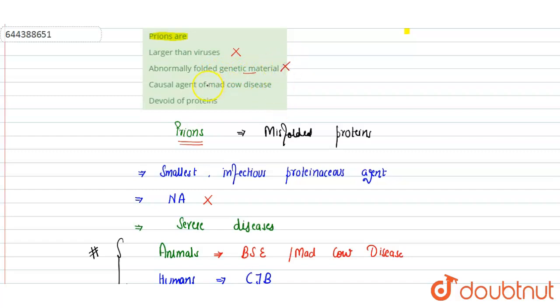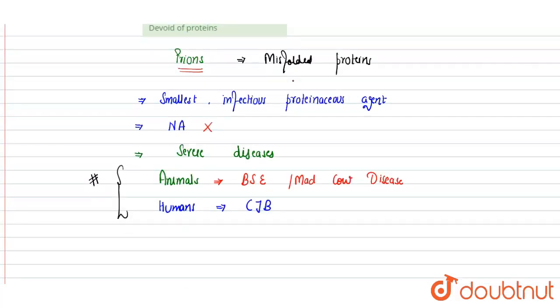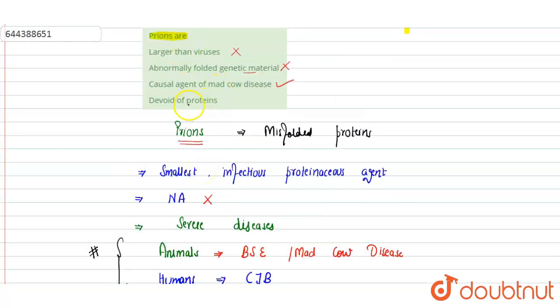Next is causal agent of mad cow disease - this is correct. The major causal agents in animals or bovines - the mad cow disease - is the prions. And devoid of protein - this is very incorrect because prions means these are proteins, these contain proteins.